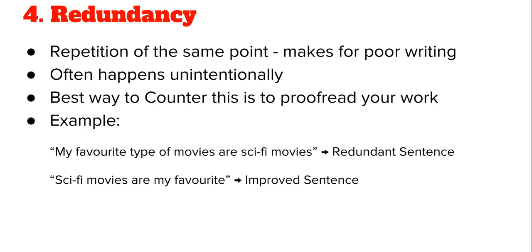The next point is redundancy. Redundancy basically means repetition — repeating one thing over and over. That is a poor and immature type of writing. It is in human nature to repeat things, which is fine verbally, but you need to avoid this in writing. The best way to avoid redundancy is to proofread your work. Proofreading is the biggest aid — nothing works without it.